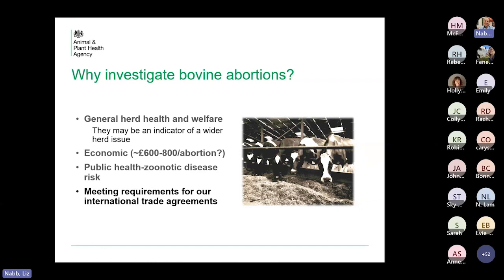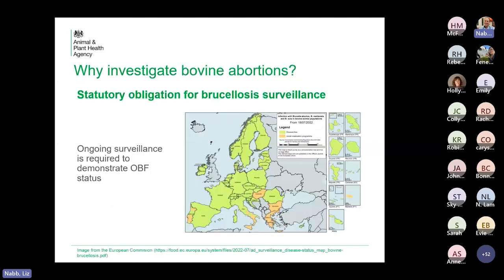So one of our roles is protecting public health. And then we have one really, really important reason — it's the reason we're here doing these subsidised abortions: to meet our international trade agreements. The EU is largely free of brucellosis, and in order for us to do international trade, we have to do ongoing surveillance like all the countries that we trade with to prove that we are free of brucellosis.